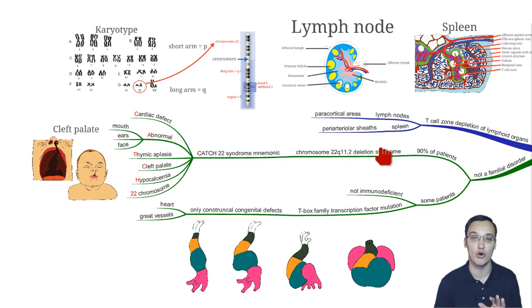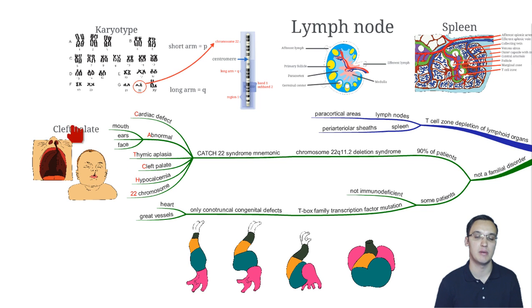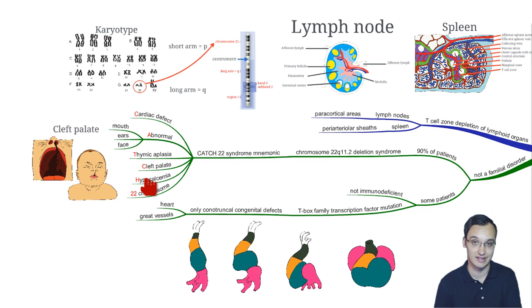You can memorize it with the mnemonic CATCH-22 syndrome: C-A-T-C-H 22. C stands for cardiac effect, A for abnormal mouth, ears and face, T for thymic hypoplasia, C for cleft palate — you can see the baby having cleft palate — H for hypocalcemia, because we don't have the third and fourth pharyngeal pouches, so no parathyroid gland to secrete calcium, giving rise to tetany. And 22 refers to the 22nd chromosome.